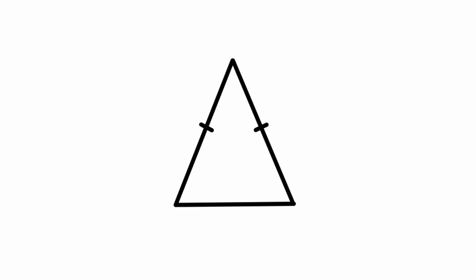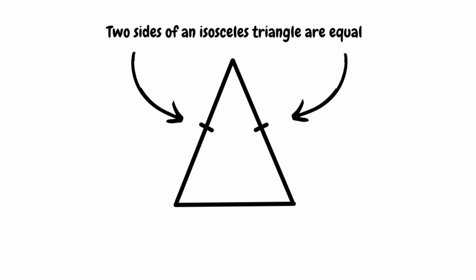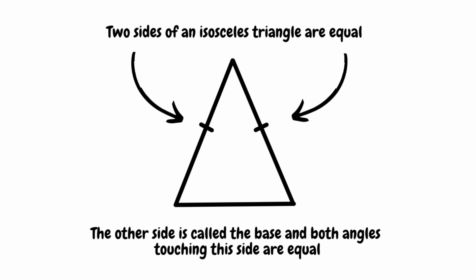In this video we're going to take a look at finding angles in isosceles triangles. When we have an isosceles triangle, two of the sides will always be equal, and we can see which ones these are by the marks on the sides. Once we've identified our two equal sides, that other side is called the base. Both the angles that are touching this side will be equal. The base won't always be at the bottom — isosceles triangles can sometimes be orientated differently, so it's important that we are able to identify that base side.